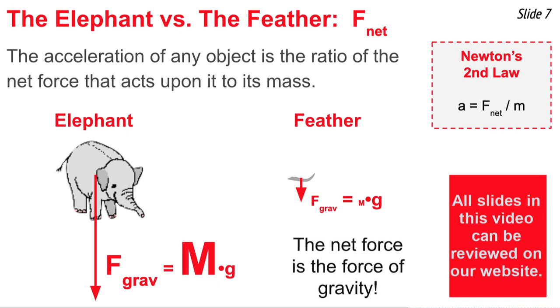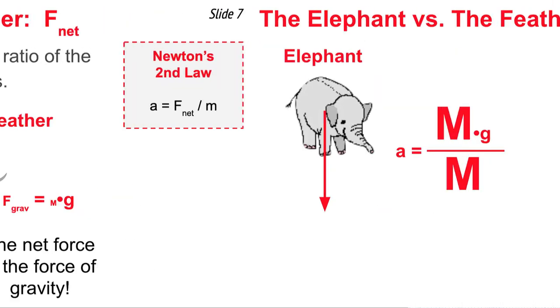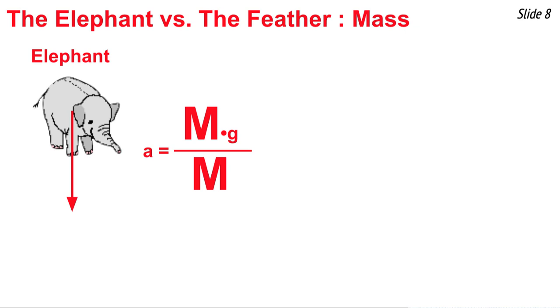So you'd think right away that the net force is going to be much greater for the elephant. Maybe it should accelerate with a greater acceleration. But then we have to also consider the mass of these two objects. So when we look at the elephant, we have to take the numerator, M times G,